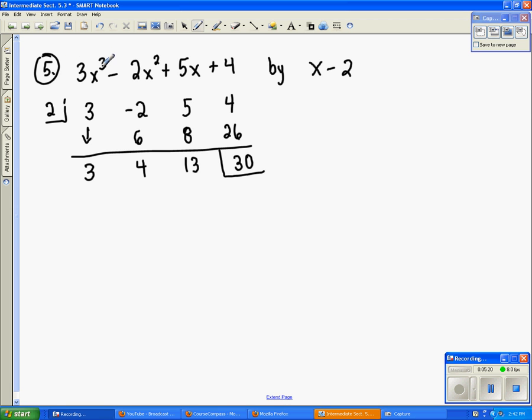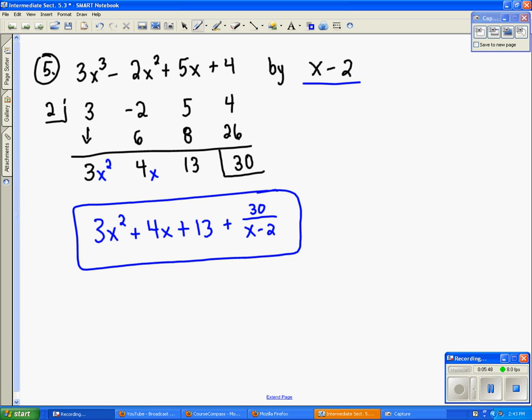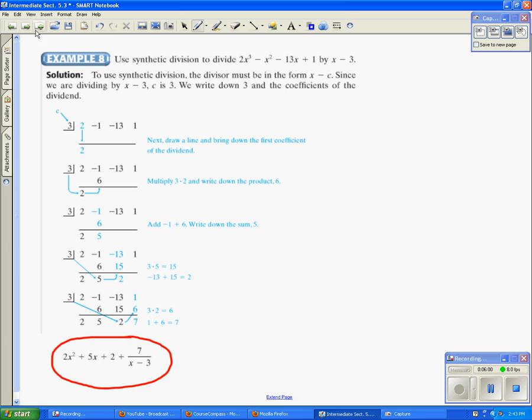Now, if my leading coefficient, my degree of my polynomial is x to the third, then my answer is going to be one degree less. So x squared, x, and then so that's 3x squared plus 4x plus 13. And since I have a remainder this time, I'm going to put plus whatever my remainder is over my original divisor. So that's how your solution looks. If these were out of order, you have to put them in order first, and also if a term is missing, say this term wasn't there, I would have to put 0 as a placeholder.